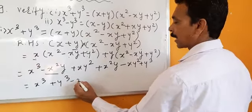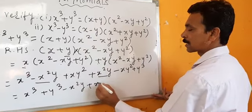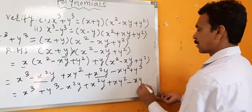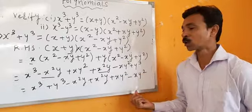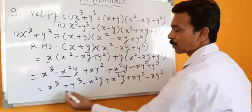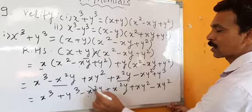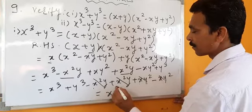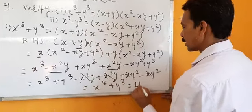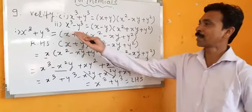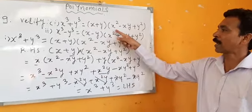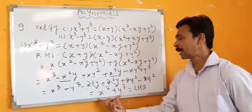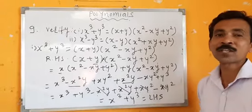Now collecting like terms: x cube and y cube remain. Minus x squared y plus x squared y gets cancelled. XY squared minus xy squared gets cancelled. So we are left with x cube plus y cube, which equals the left-hand side. So we have proved x cube plus y cube equals (x + y) into (x squared minus xy plus y squared) by taking the right-hand side and solving.